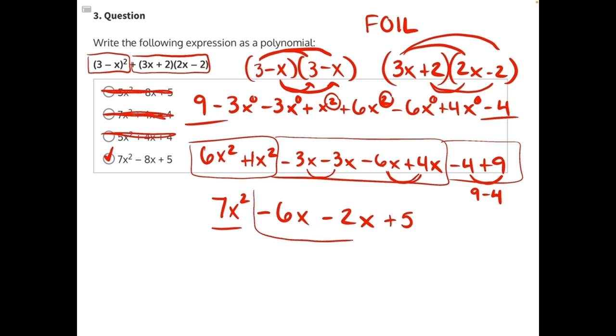Our last two terms to combine are negative 6x and negative 2x, which will give us a negative 8x plus 5. This expression perfectly matches answer choice D, making it our correct answer.